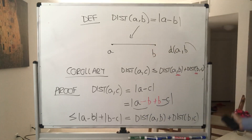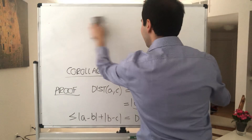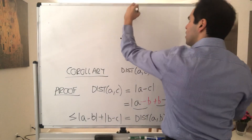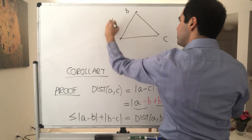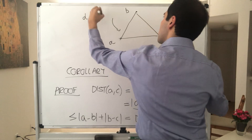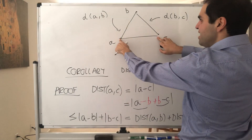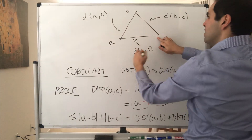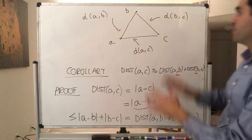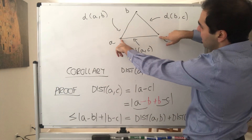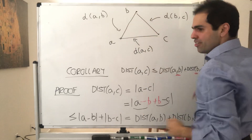And this illustrates why it's really called the triangle inequality. Suppose you have a triangle with vertices a, b, and c. The distance between a and b is one side, the distance between b and c is another side. What this is saying is that the distance between a and c is always smaller than the sum of the lengths of the other two edges — the third leg of a triangle is always less than or equal to the sum of the other two legs.